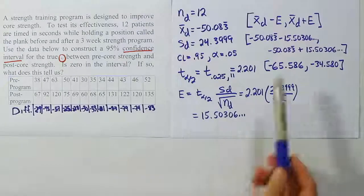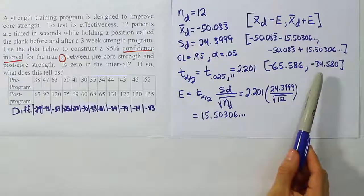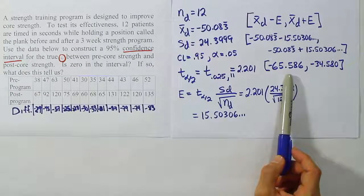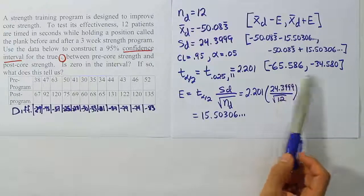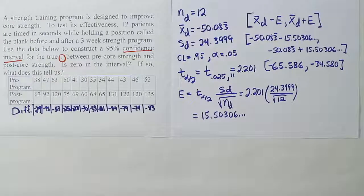Of course, what these times specifically mean is that the difference between, for typical people, the difference between the pre- and post-program length of time that they can hold the plank is going to be somewhere between minus 34 seconds up to minus 66 seconds roughly. So somewhere in there is the true average difference between the pre- and post-program plank times.